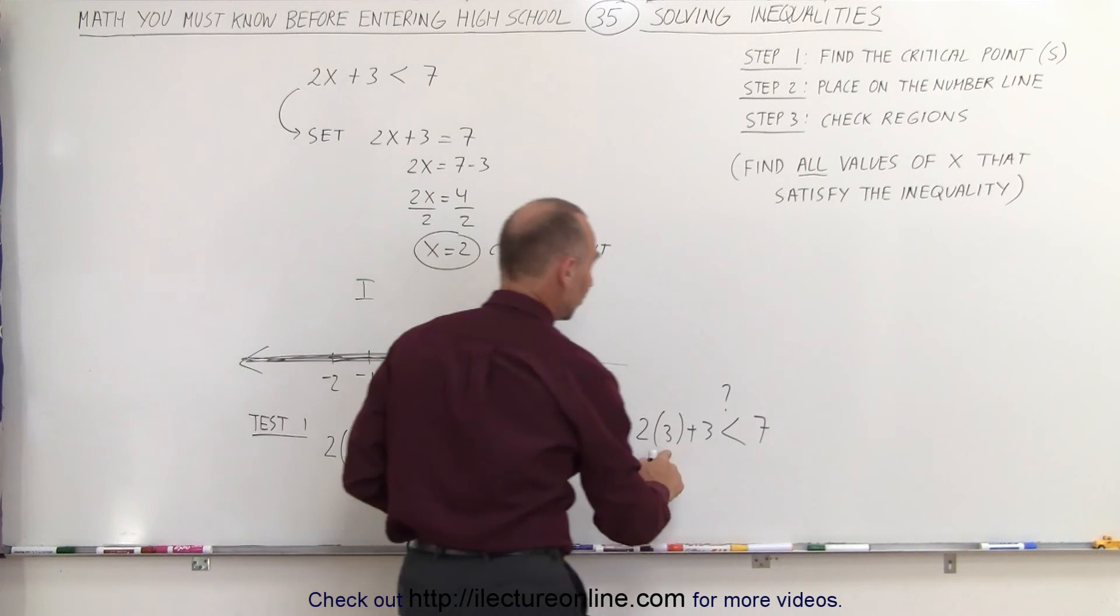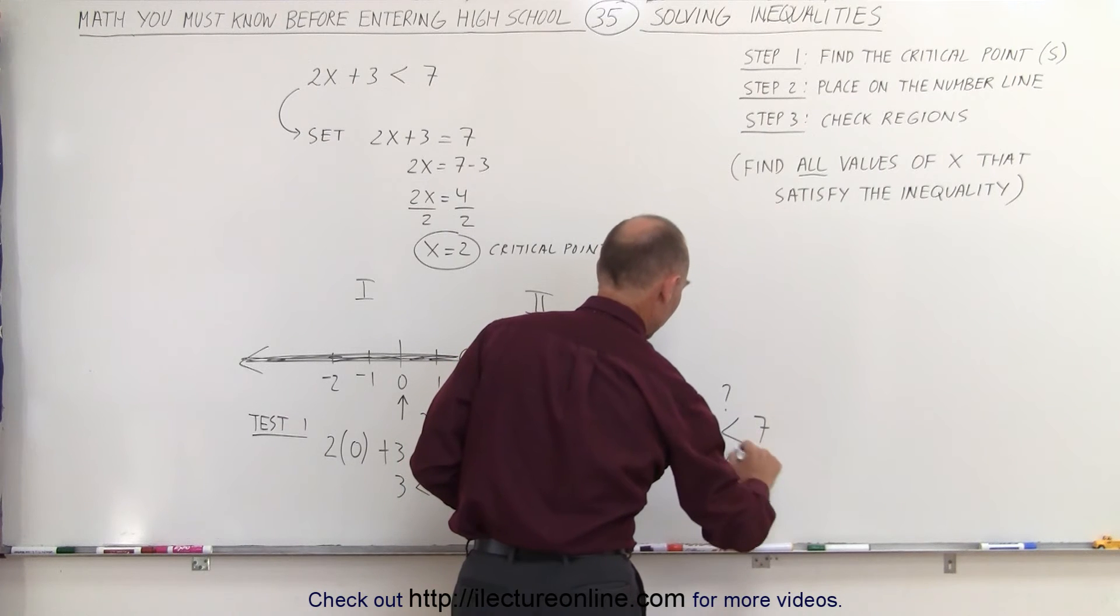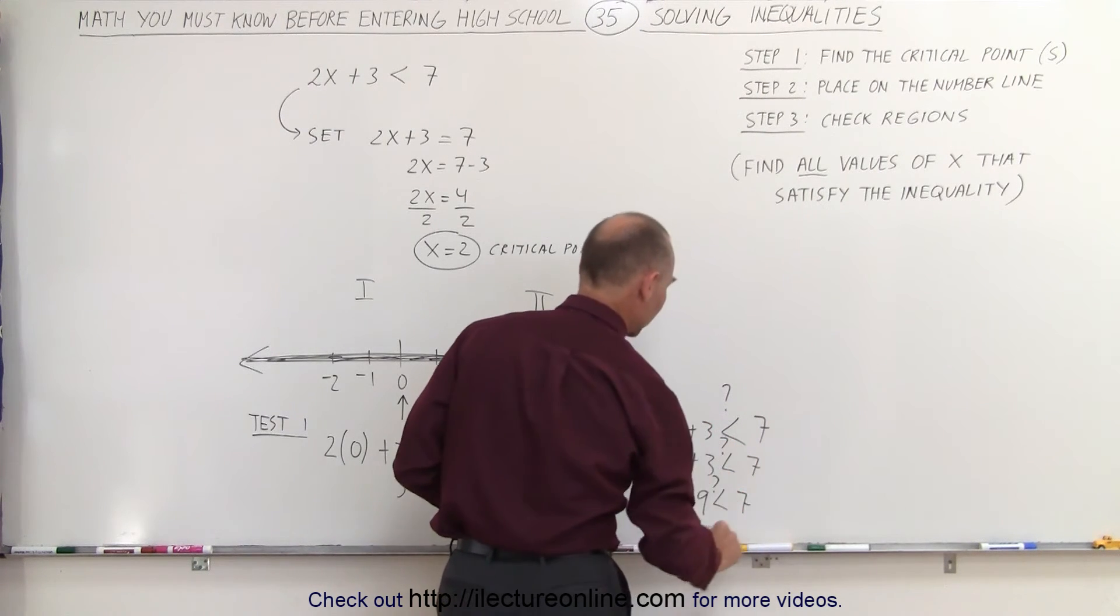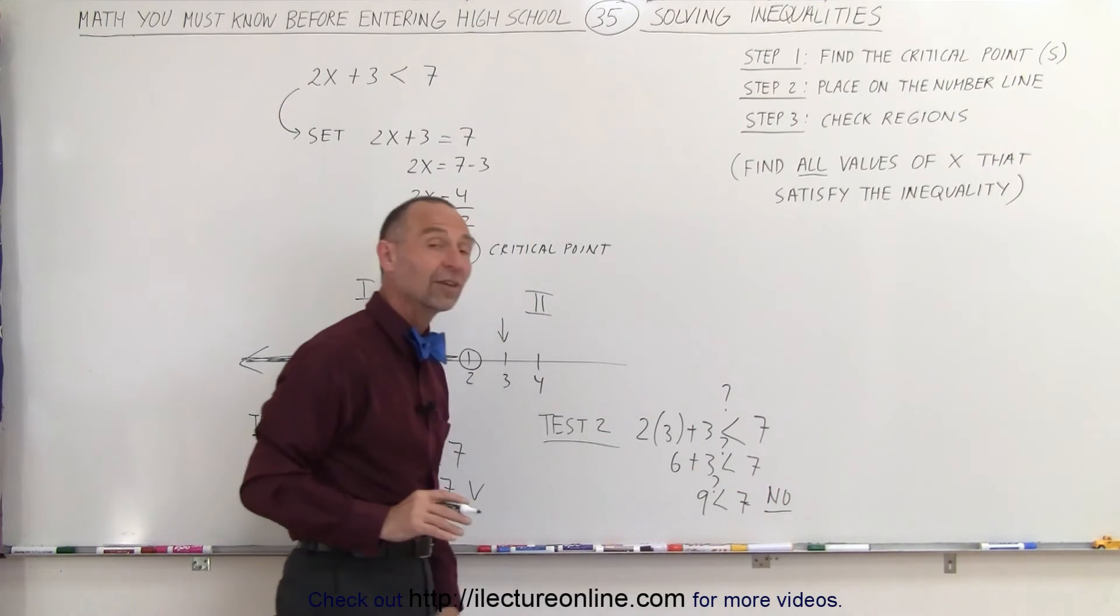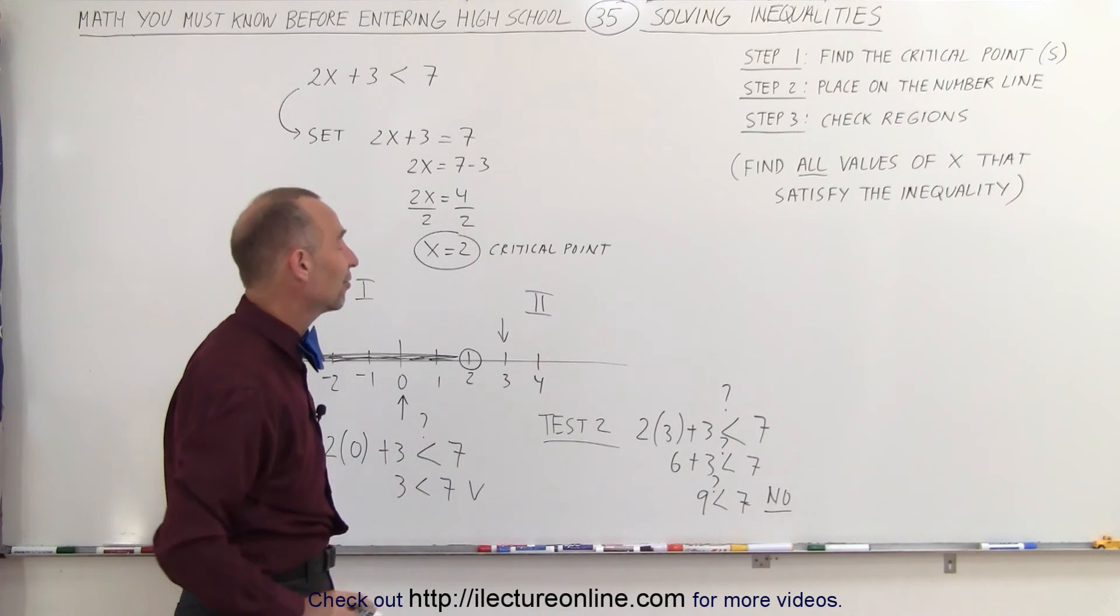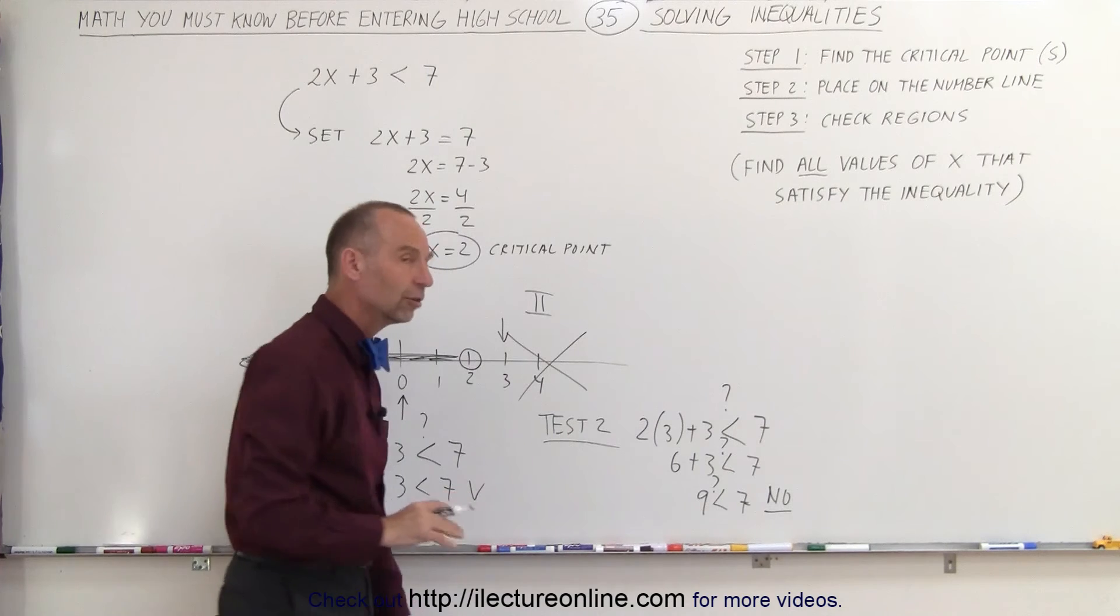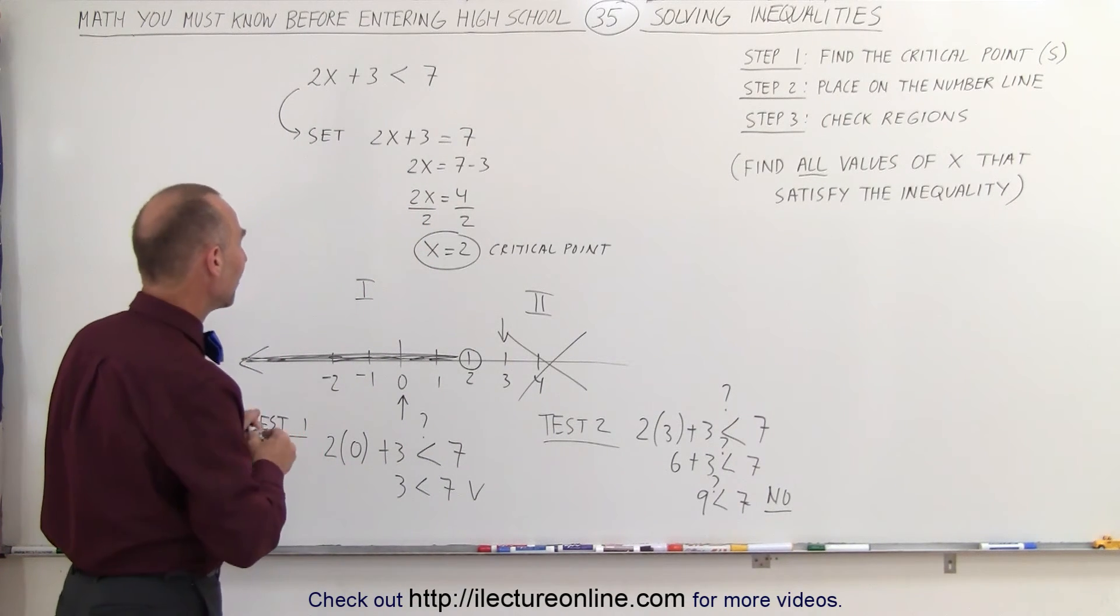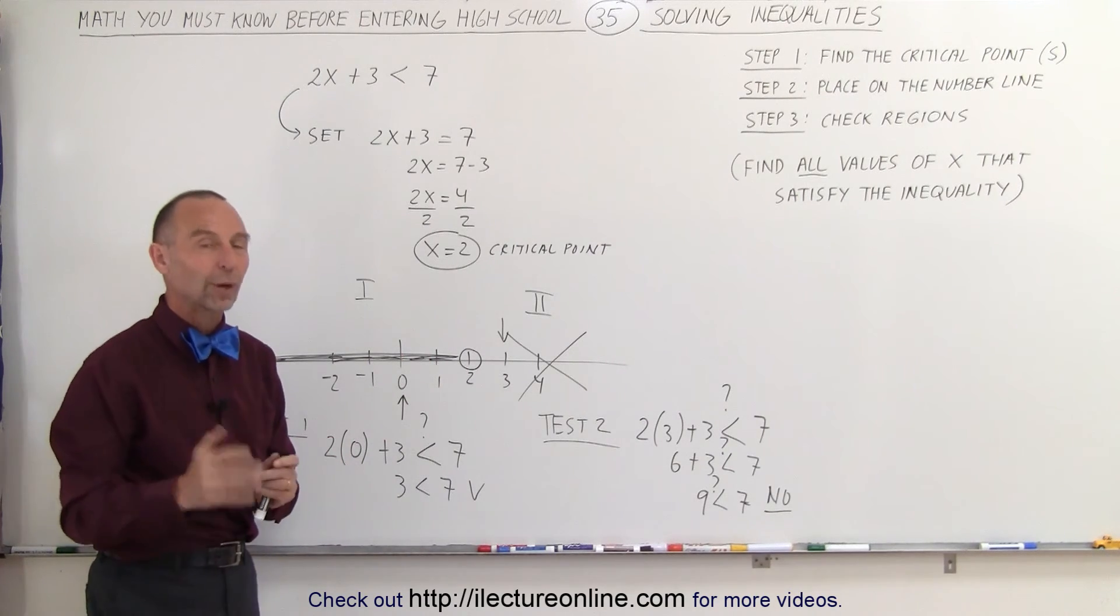2 times 3 is 6. 6 plus 3 is 9. So 6 plus 3 less than 7 question mark. And so is 9 less than 7 question mark? And the answer is no. 9 is larger than 7. It's not less than 7. So therefore it does not satisfy the inequality which means the whole region to the right side of the critical point does not satisfy the inequality which means that all the values that are less than 2 satisfy the inequality none of the values that are greater than 2.